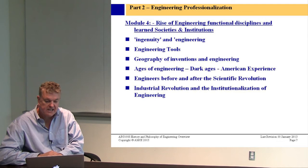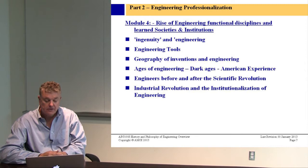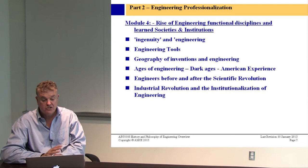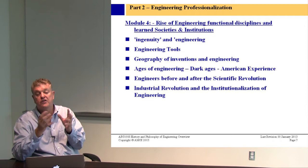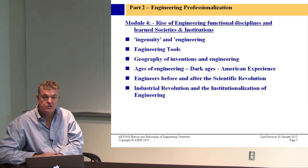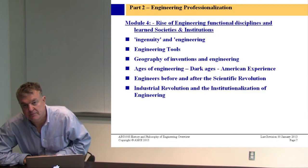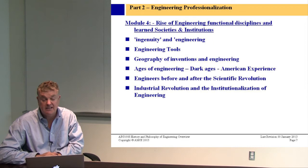Module four, slide seven: the rise of engineering functional disciplines. We'll talk about the ages of engineering from the dark ages through to the American experience, the geography of inventions in engineering, and engineers before the scientific revolution. Both architects and engineers were often referred to by each other's names during the days of Rome and through medieval times. After the Industrial Revolution, particularly in Britain, engineering was institutionalized — first with the Institution of Civil Engineers in 1818.